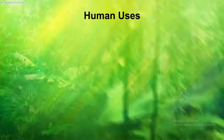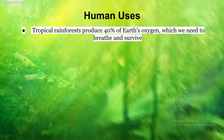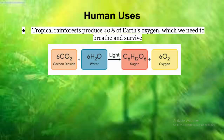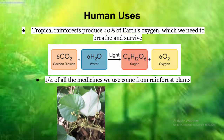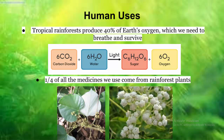Tropical rainforests are very useful to humans. An essential example of this is oxygen — tropical rainforests produce 40% of Earth's oxygen, which we need to breathe and survive. In addition, one fourth of all the medicines we use come from rainforest plants. Curare is used as an anesthetic during surgery, and quinine is used to treat malaria.